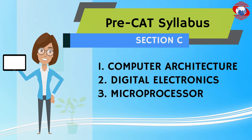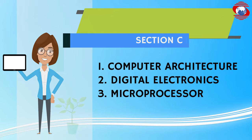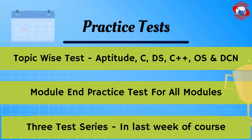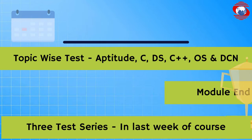Section B also covers OOPs using C++, operating system concepts, data communication and networking. Section C covers computer architecture, digital electronics, and microprocessors. Practice tests are topic-wise and include aptitude, C, data structures, C++, OS, and DCN. Three test series will be held in the last week of the course.